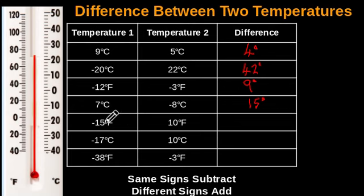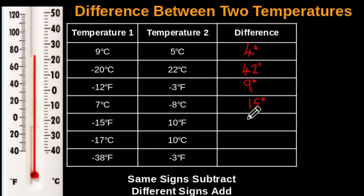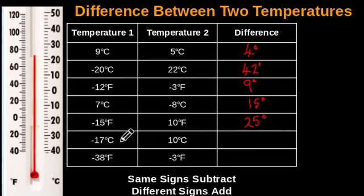Negative 15 degrees Fahrenheit and 10 degrees Fahrenheit — negative and positive, different signs. Add the values regardless of sign: 15 plus 10, that gives you 25 degrees as the difference. And negative 17 degrees Celsius and 10 degrees Celsius — negative, positive, different signs. Add: 17 plus 10 equals 27. That's the difference between the two temperatures.